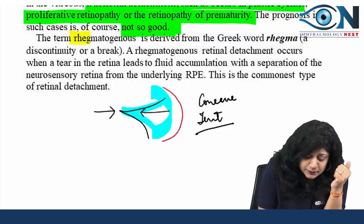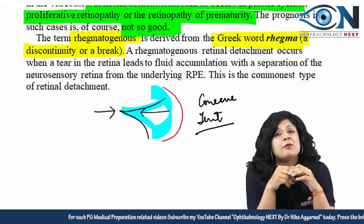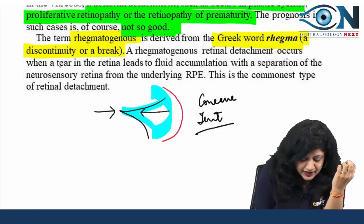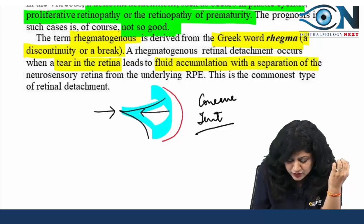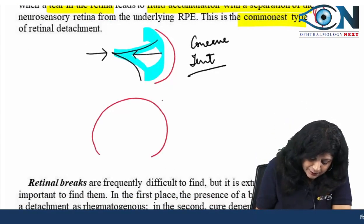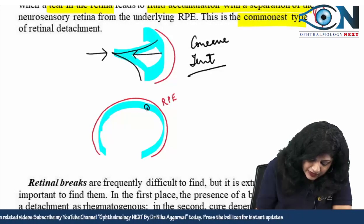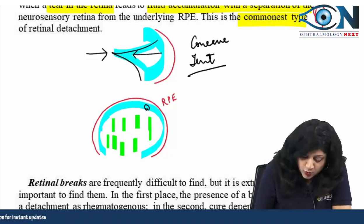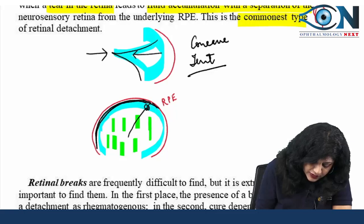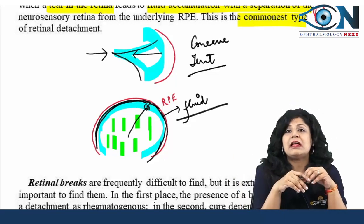The term 'regmatogenous' comes from the Greek word 'regma,' meaning a break. Regmatogenous RD is due to a retinal hole or retinal break. When there is a tear in the retina, fluid from the vitreous cavity passes through the hole and collects in the subretinal space, separating the RPE from the neurosensory retina. This is the most common type of retinal detachment.